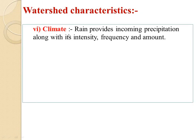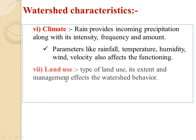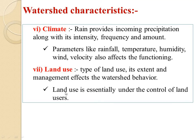Next watershed characteristic is climate. Rain provides incoming precipitation along with its intensity, frequency, and amount. Parameters like rainfall, temperature, humidity, and wind velocity also affect the functioning. Land use: the type of land use, its extent, and management affect the watershed behavior. Land use is essentially under the control of land users.